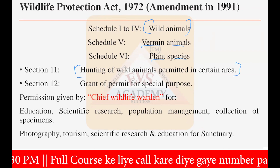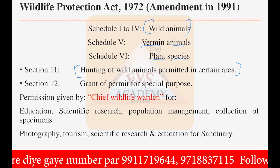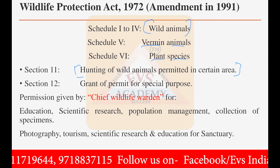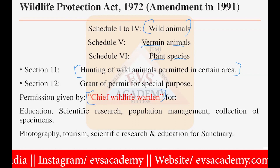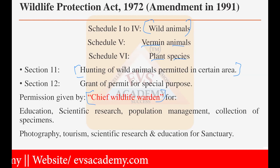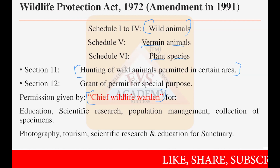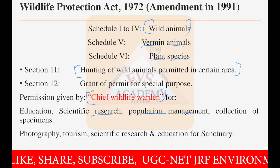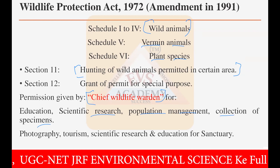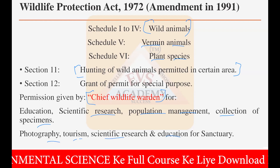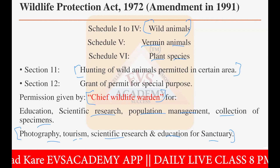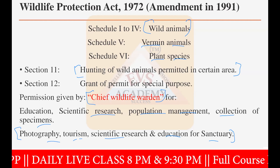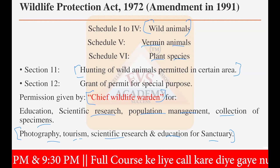Special purpose hunting can be for education, specimen collection, or similar purposes — all under section 12. Permission is needed under sections 11 and 12 and can only be granted by the chief wildlife warden. Categories like education, scientific research, population management, and specimen collection are permitted. Photography, tourism, and scientific research in the sanctuary can also be done with permission of the chief wildlife warden.